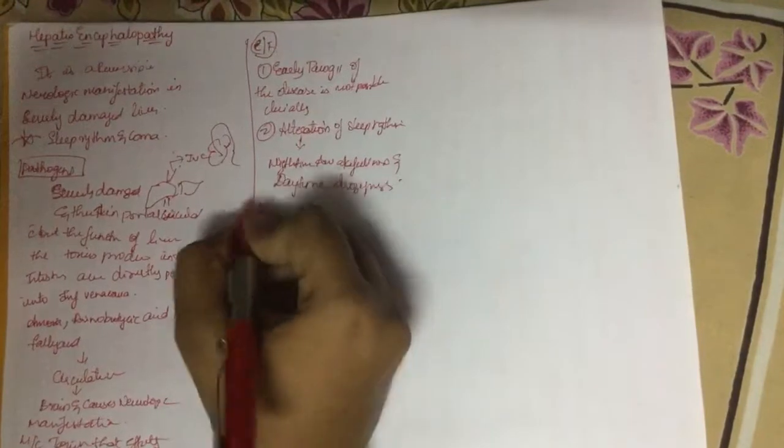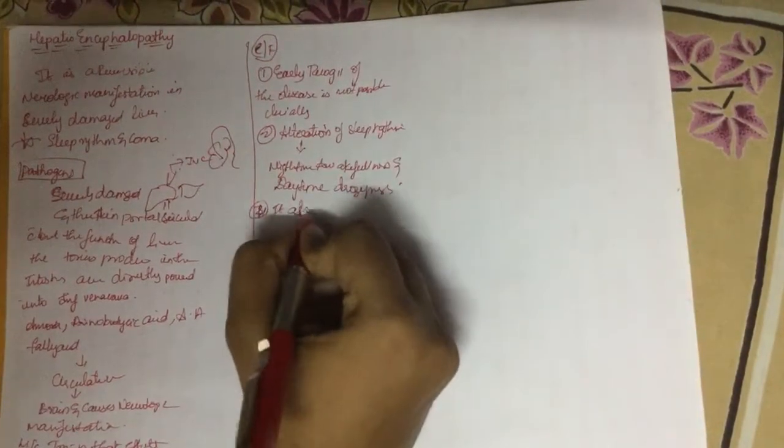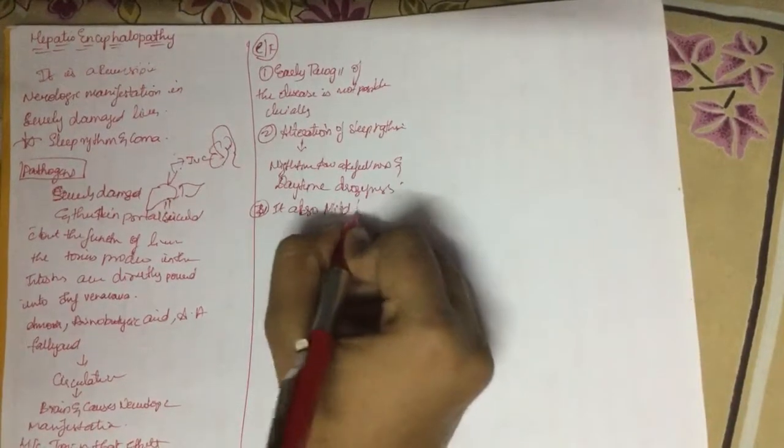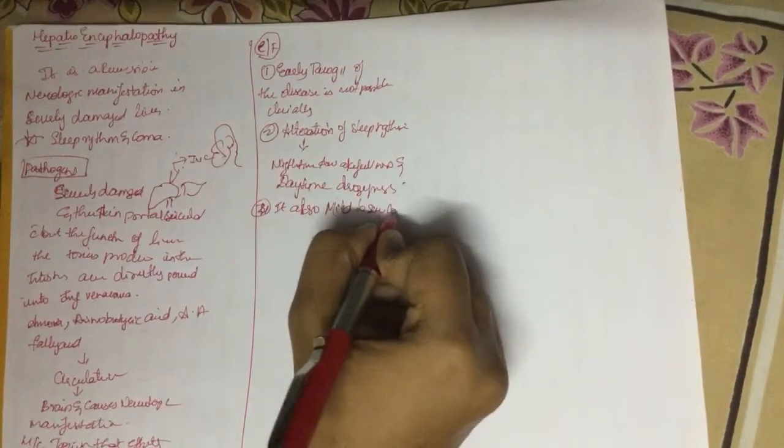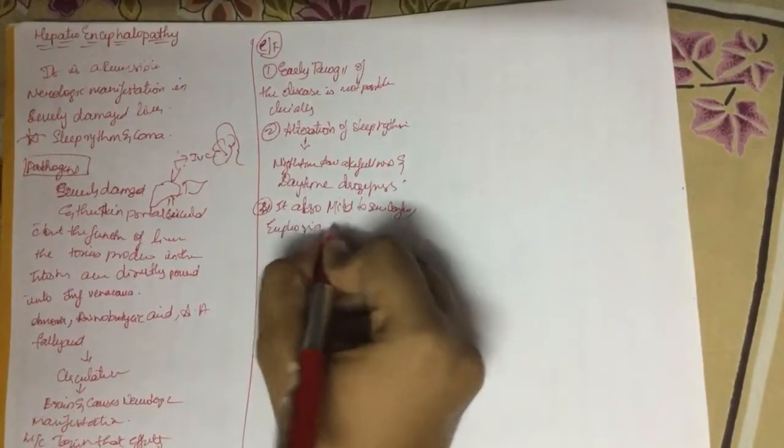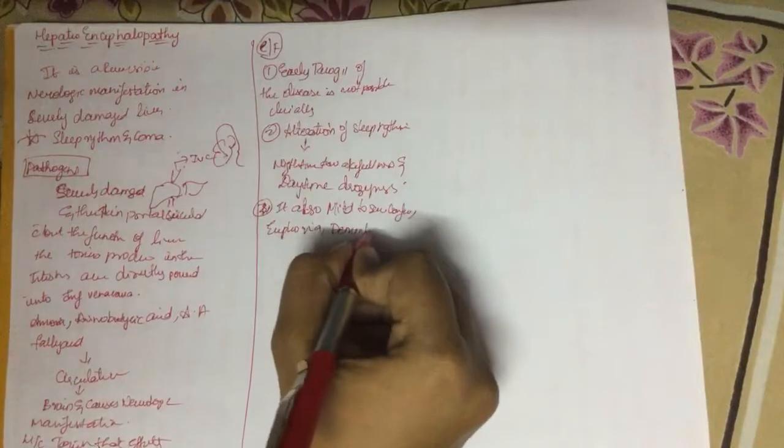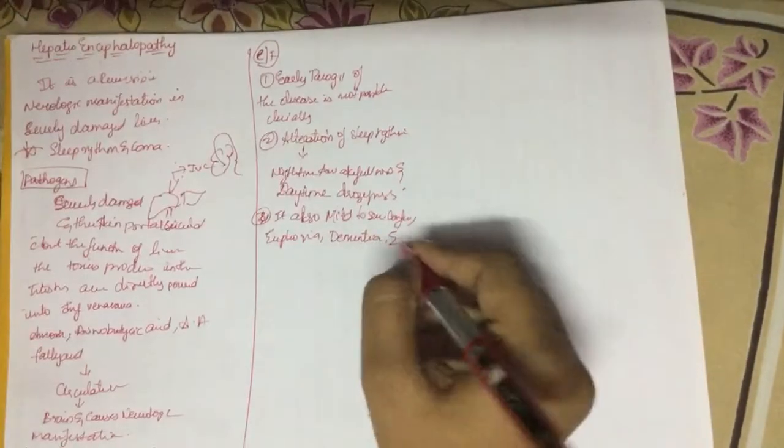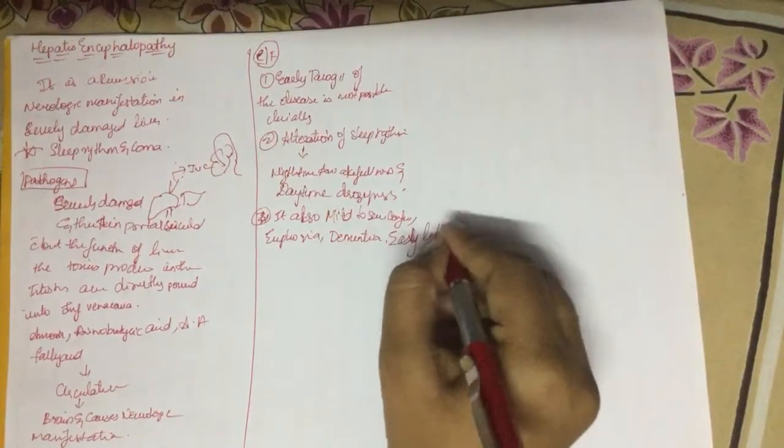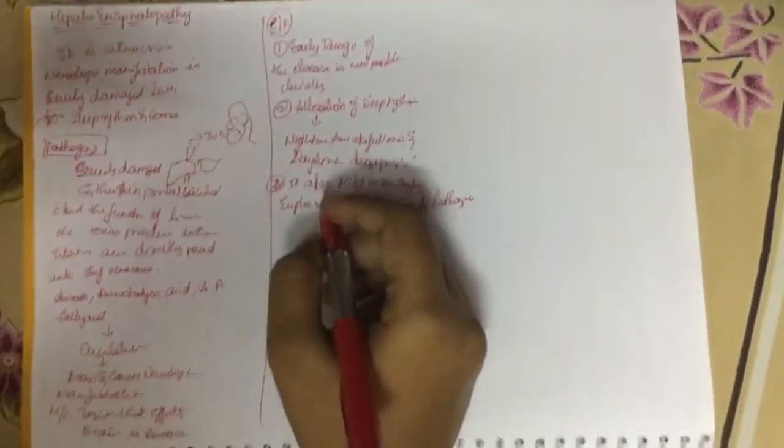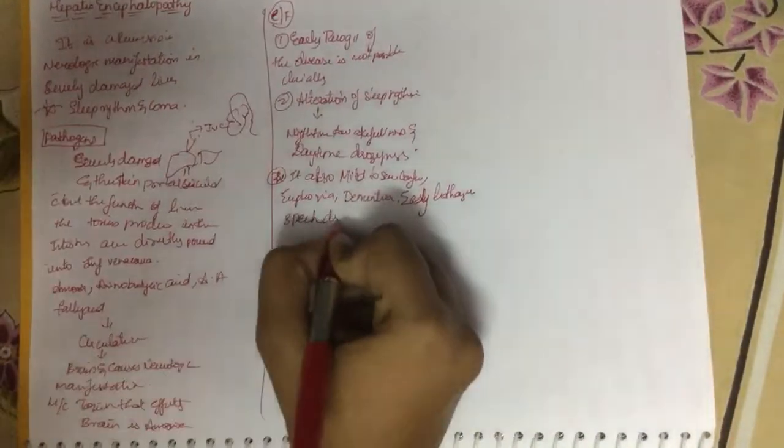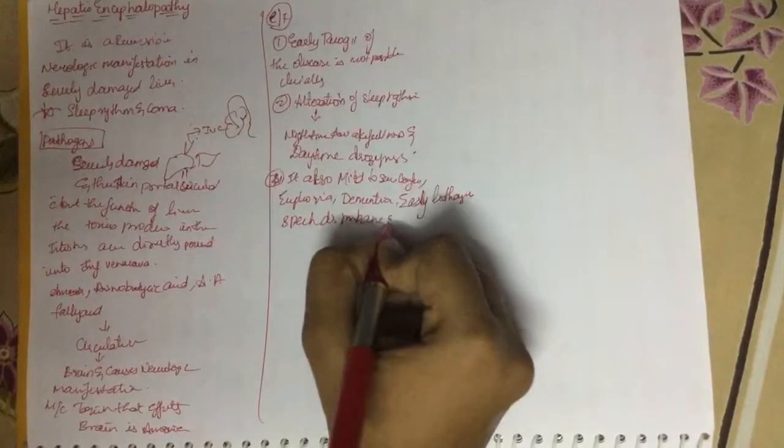It also causes mild to severe confusion, euphoria, dementia, lethargy, speech disturbance, and coma.